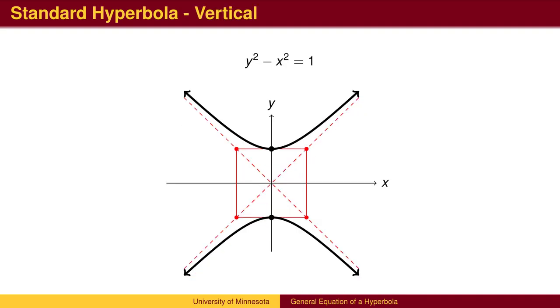For the hyperbola y squared minus x squared equals 1, we have the same asymptotes, but the vertices are now on the y-axis at plus and minus 1.